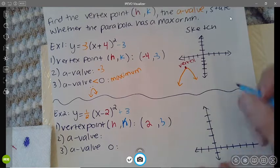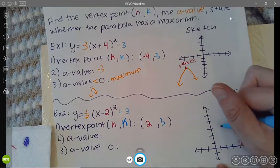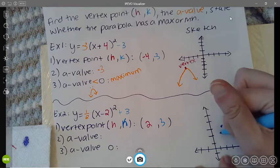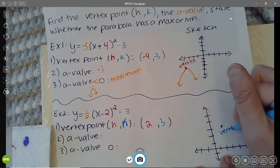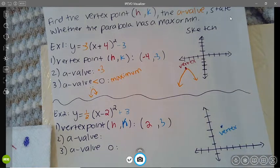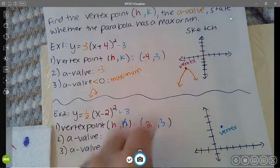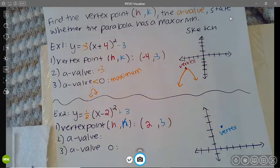So this is my vertex. And then the a-value tells me if the graph faces up or down. Let's see what happens with that.